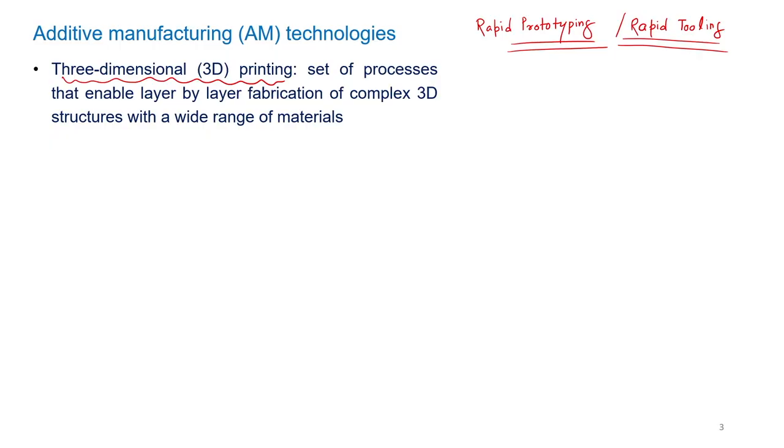Now, by using mechatronics, manufacturing automation, advanced techniques, and polymeric methods, we can easily generate the required product using compatible materials, realizing the shape and size at a very early stage. This process is layer-by-layer fabrication. Whatever complex 3D shape we need, we manufacture it by layer-by-layer addition — that is why it is called additive manufacturing.